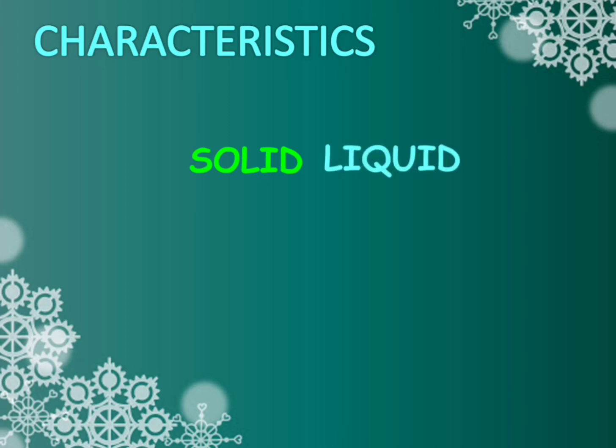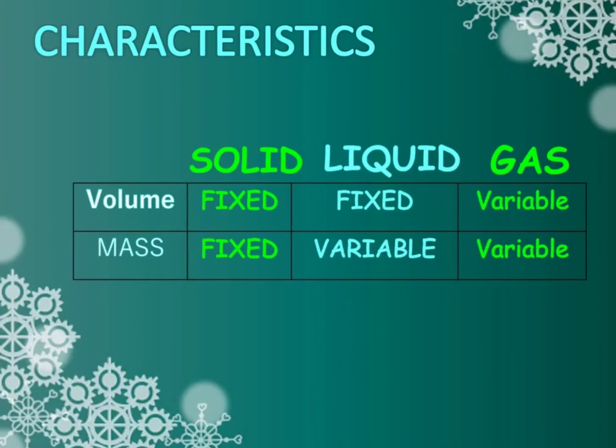Solids. Liquid. Gas. You can see this table here. It is divided into two parts. That is volume and mass. For solids, the volume is fixed and mass is also fixed. That means they cannot change their shape and size.